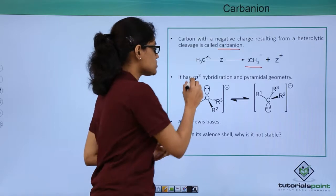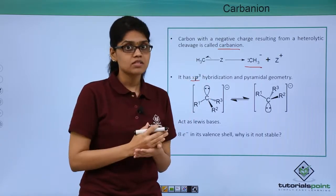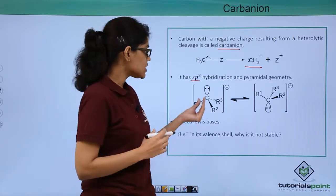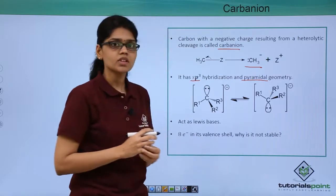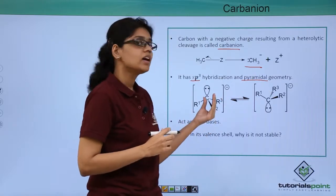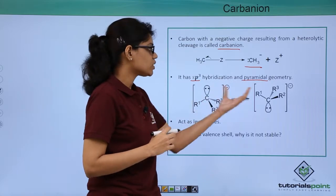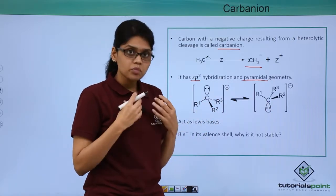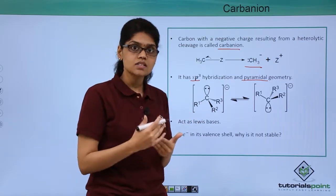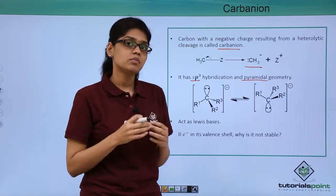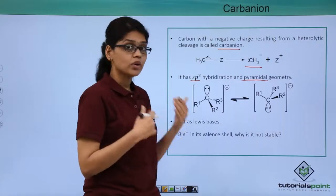The carbanion has SP3 hybridization. SP3 hybrid compounds have a tetrahedral structure, but because it has a lone pair of electrons rather than a bond pair, it has pyramidal geometry. These two structures are inverted images of each other, and inversion of one gives the other. The importance of inversion and the conditions under which it takes place will be studied in detail during organic reactions and mechanisms.